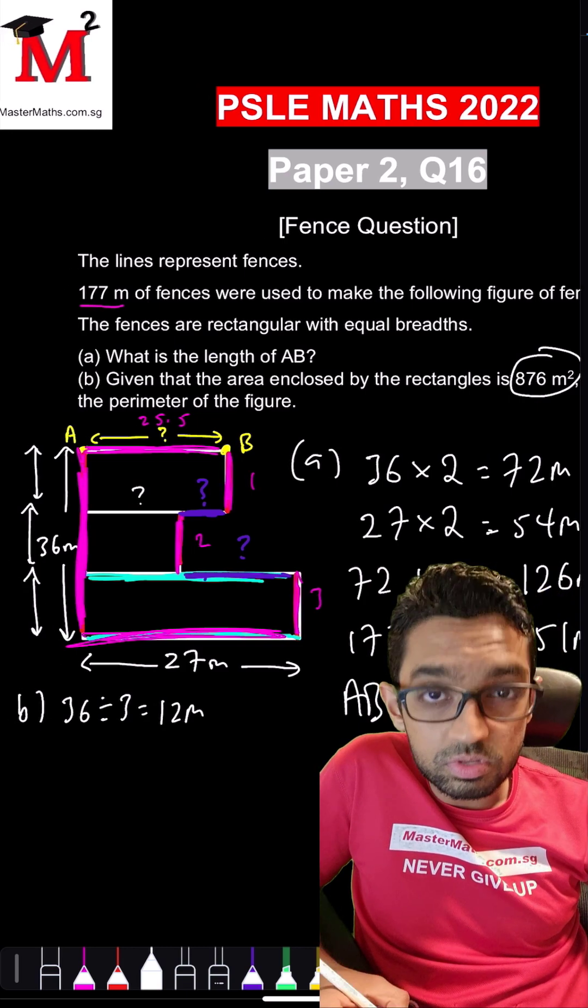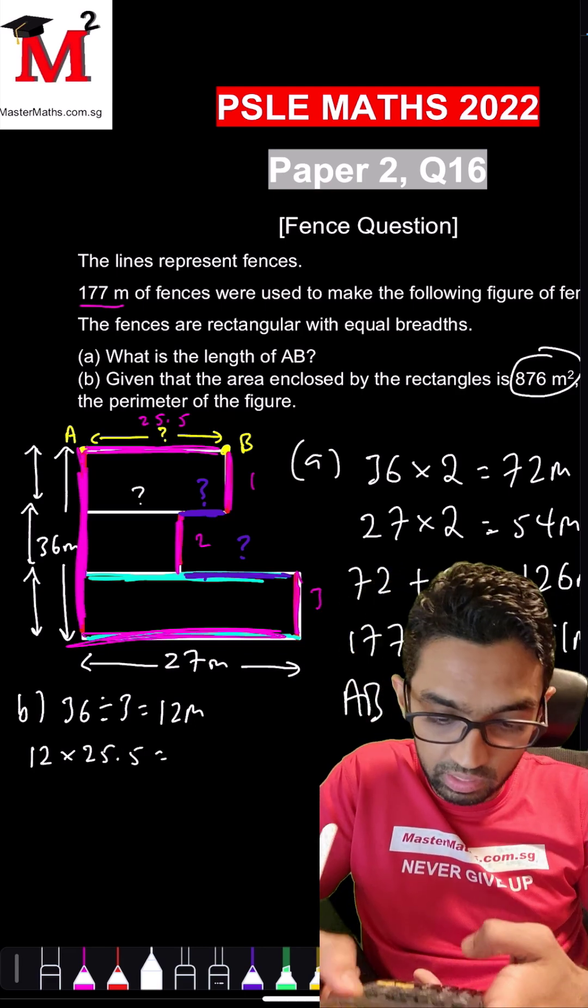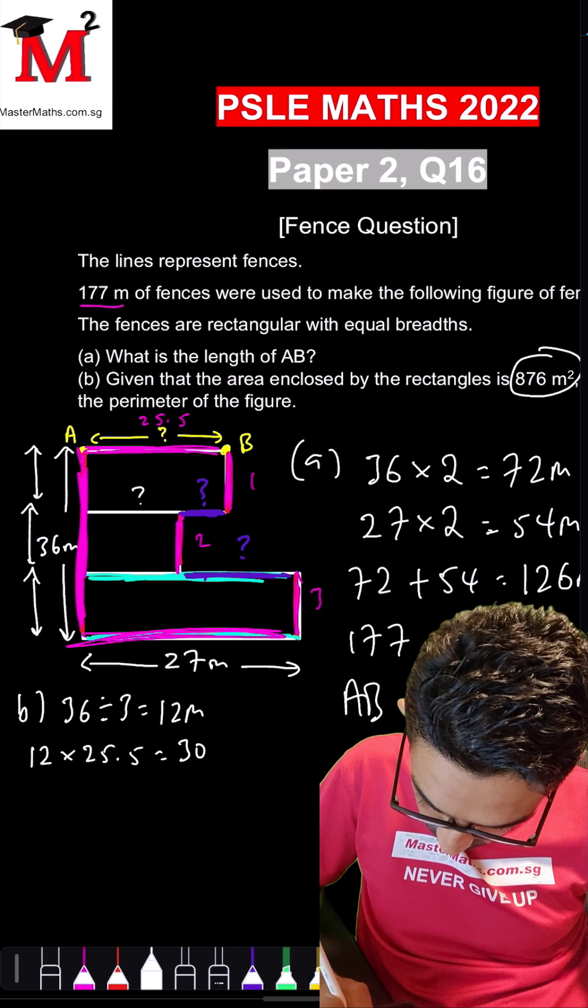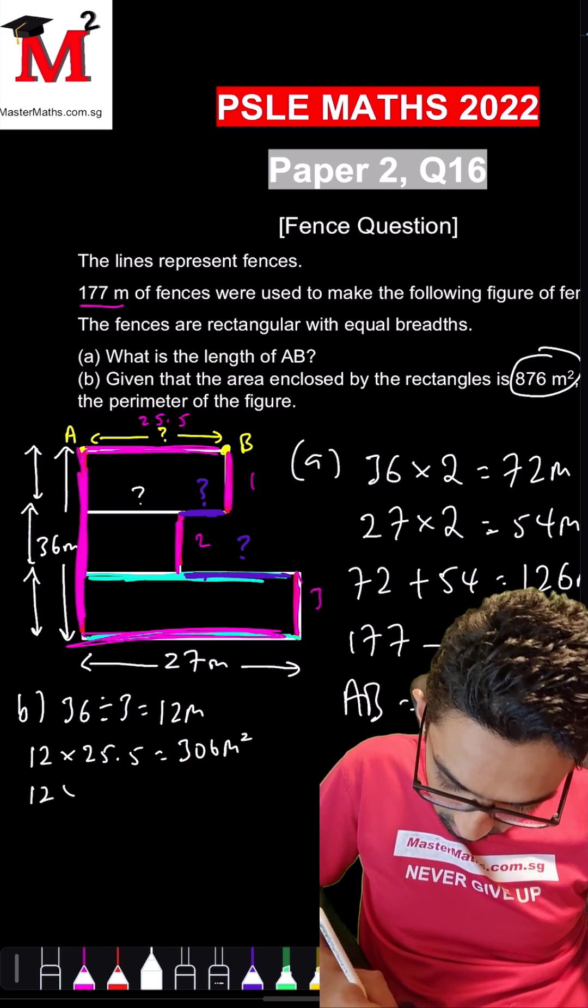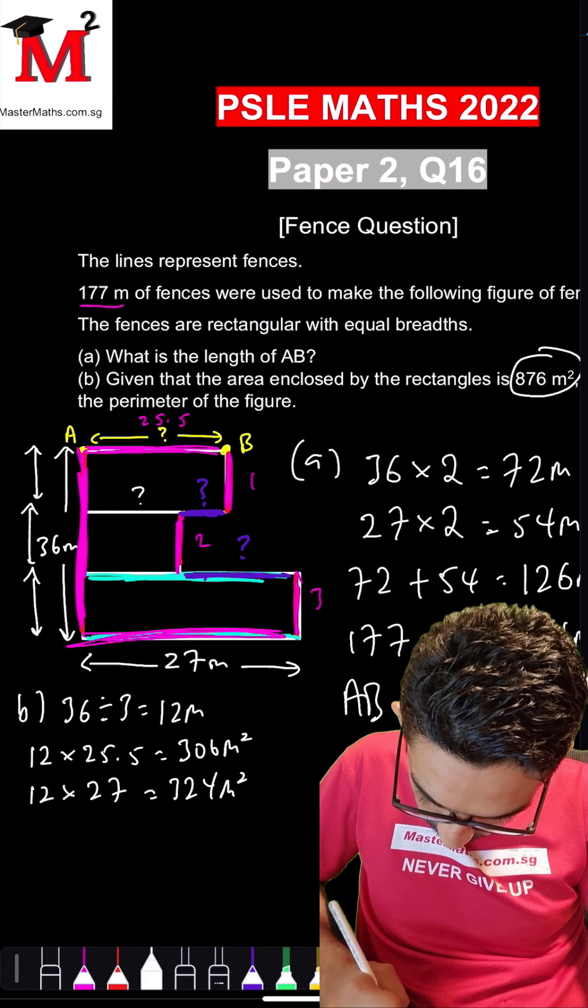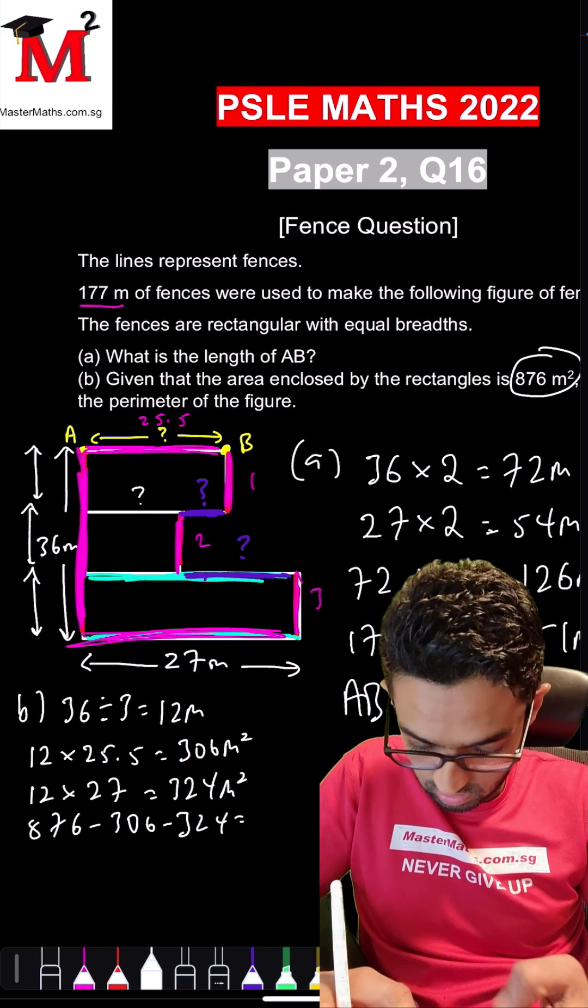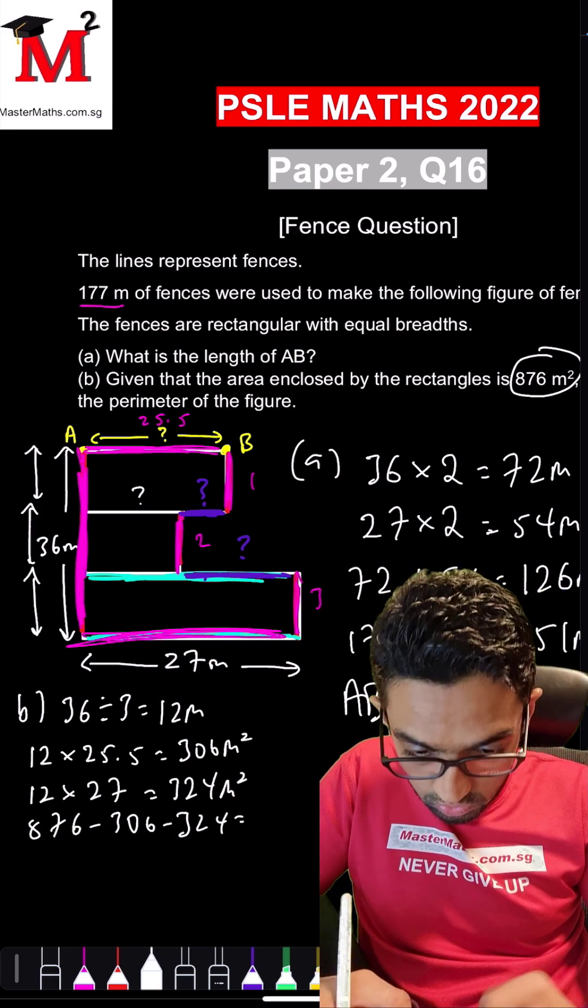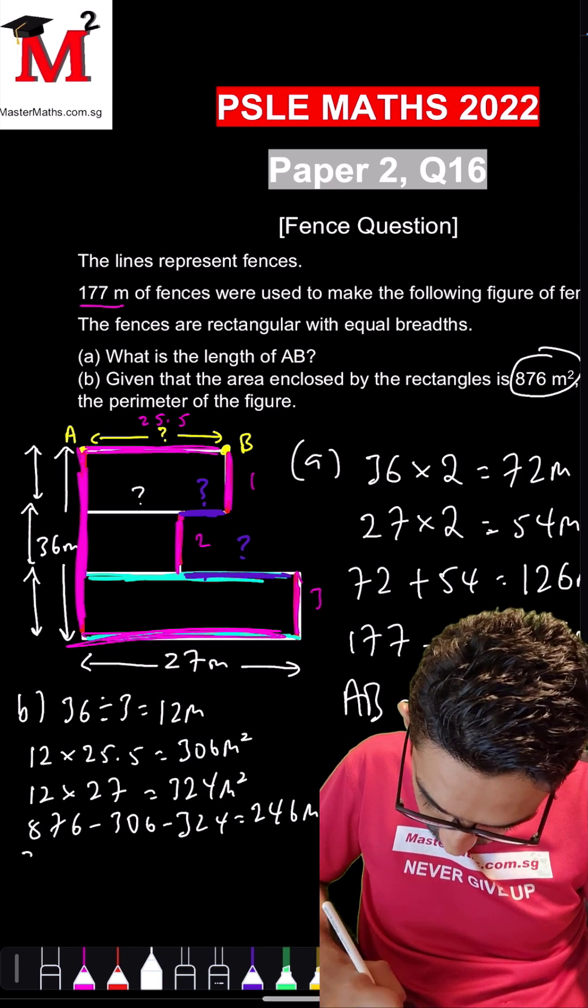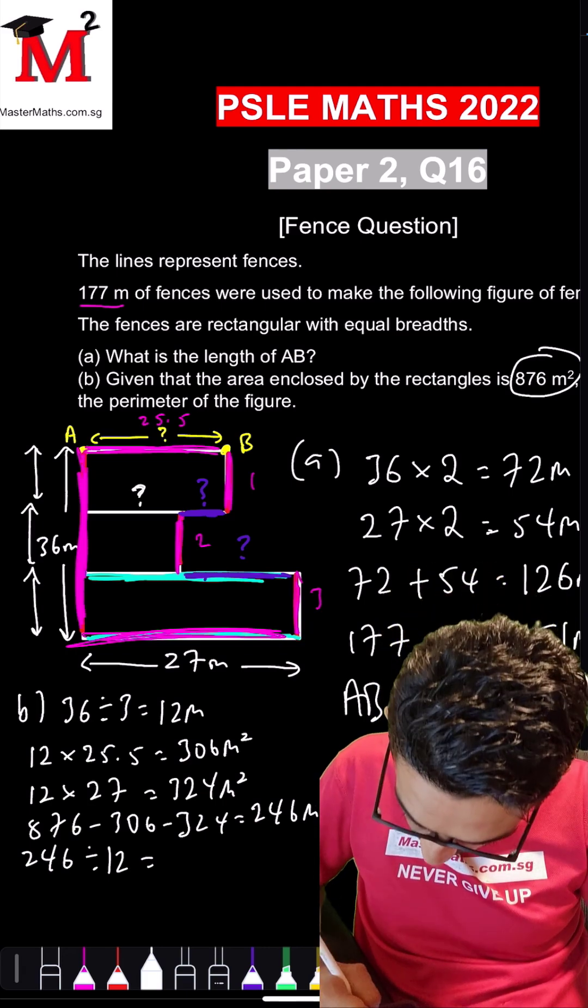So next step, we find the area of the topmost rectangle which is 12 times 25.5. Paper 2 so you can use the calculator again, 12 times 25.5. So that is 306. Take 12 times 27 for the bottom most rectangle, 324. And we'll take the total area 876 minus 306 minus 324 and we'll get 246. So we take 246 divide by 12 to get that length that we so desperately need. We'll get 20.5.